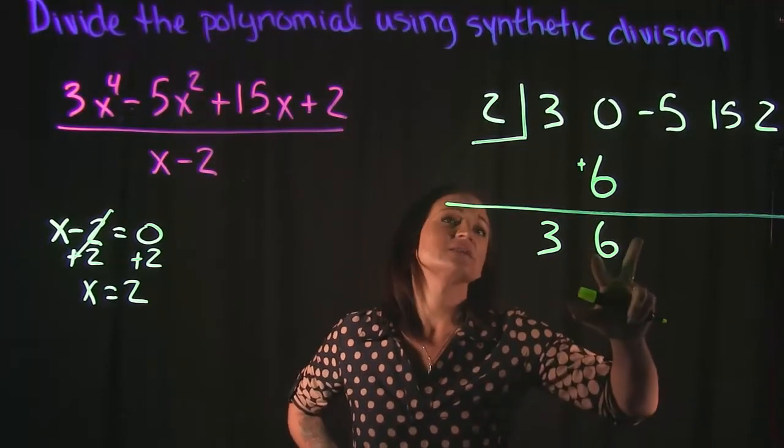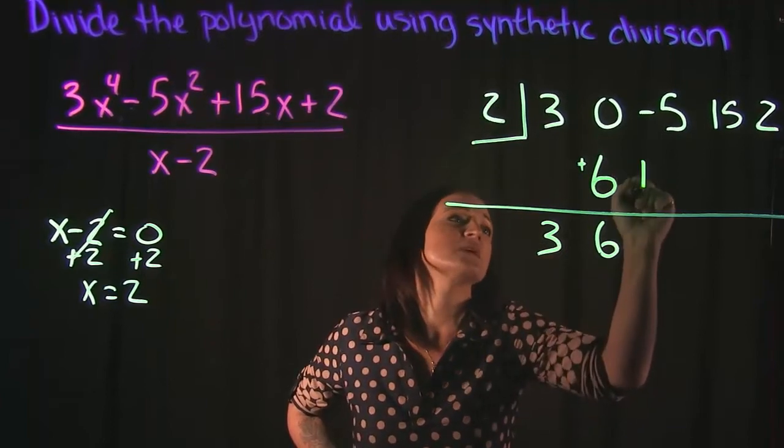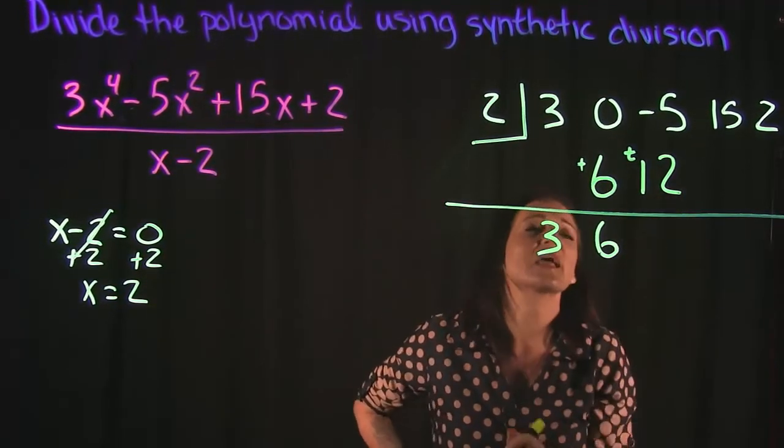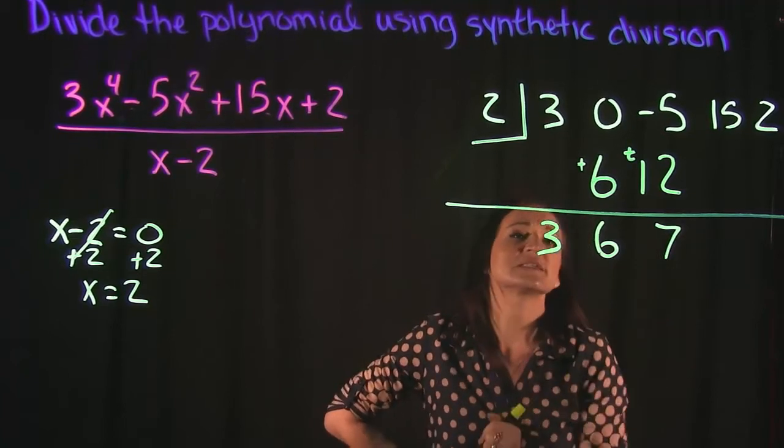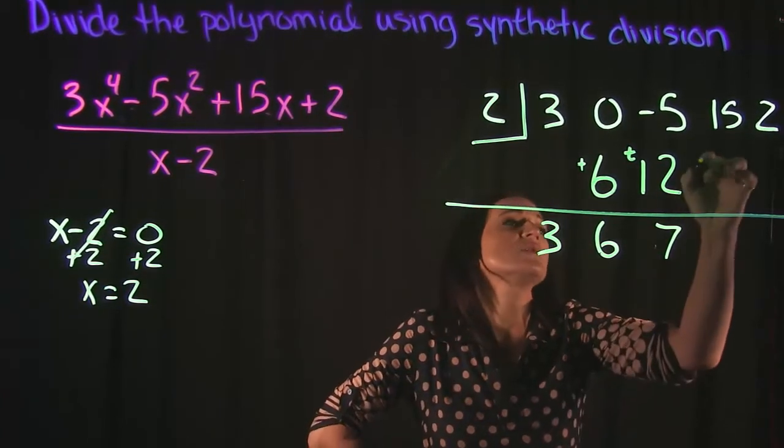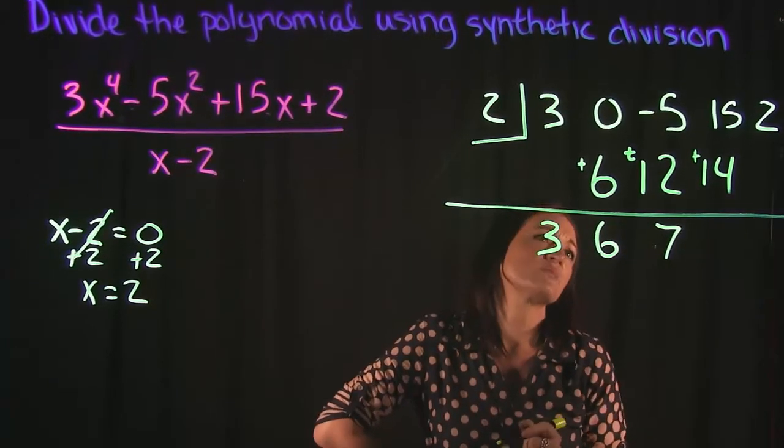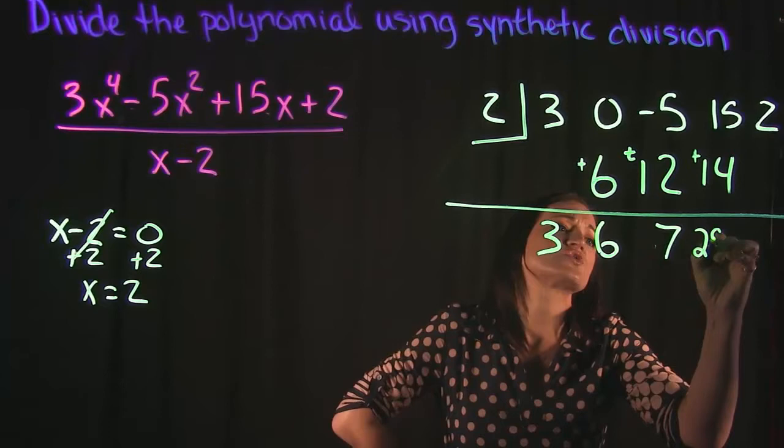Then we multiply again. 6 times 2 is 12, and now we add. When we add that, negative 5 plus 12 is a 7. 7 times 2 is 14. When we add this, 15 plus 14 is 29.